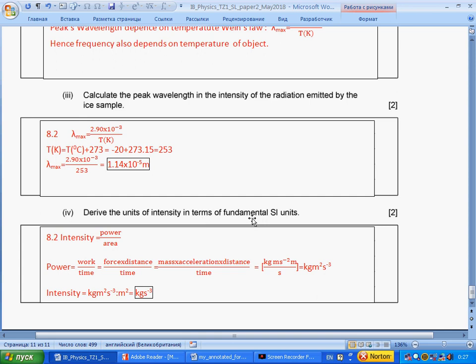Derive the units of intensity in terms of fundamental SI units. Intensity from 8.2 equals power over area. Power equals work by time. Work equals force times distance. Force equals mass times acceleration. Then we put for each quantity base units and divide by meter squared. This is our answer. Paper is over.